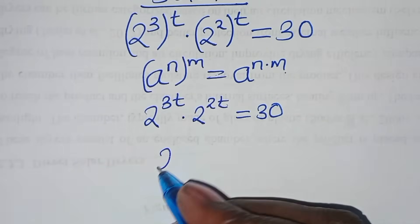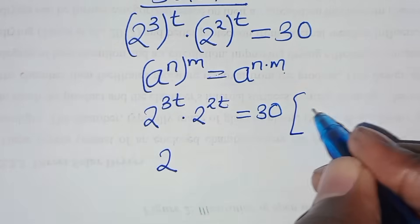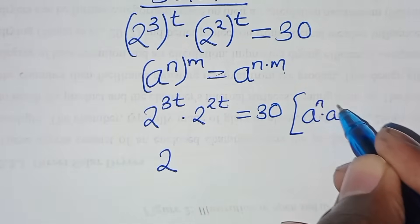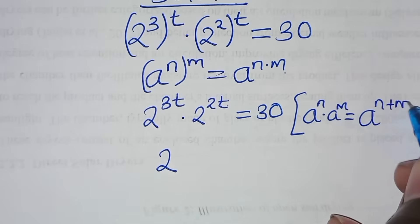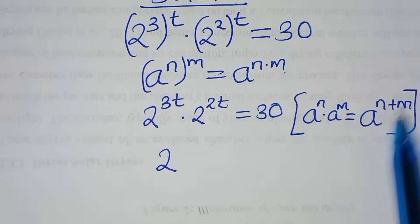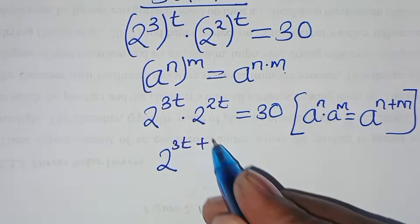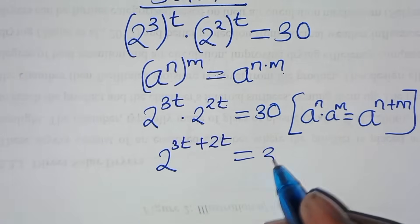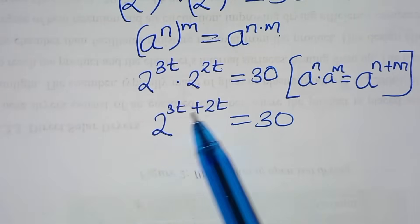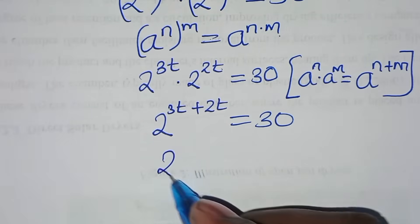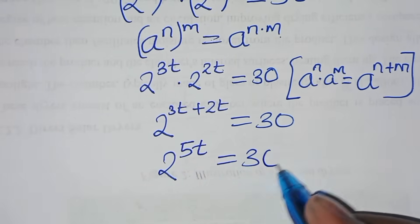Now, this is in the form of a to the power n times a to the power m, which we can express as a to the power n plus m. Applying this property, we have 2 to the power 3t plus 2t, which is 2 to the power 5t, equal to 30.